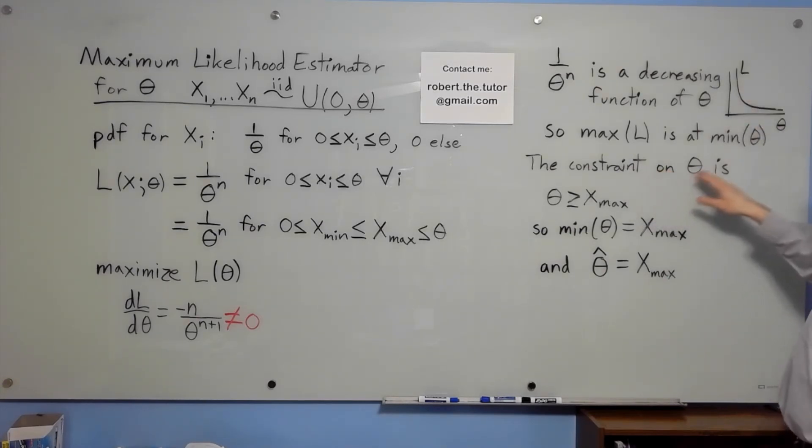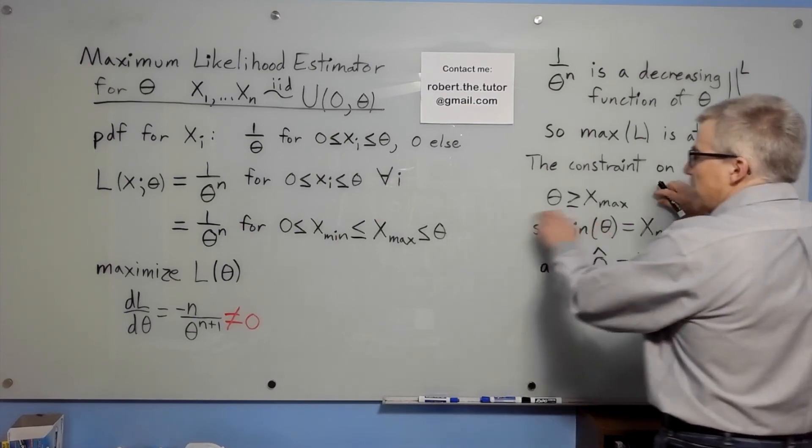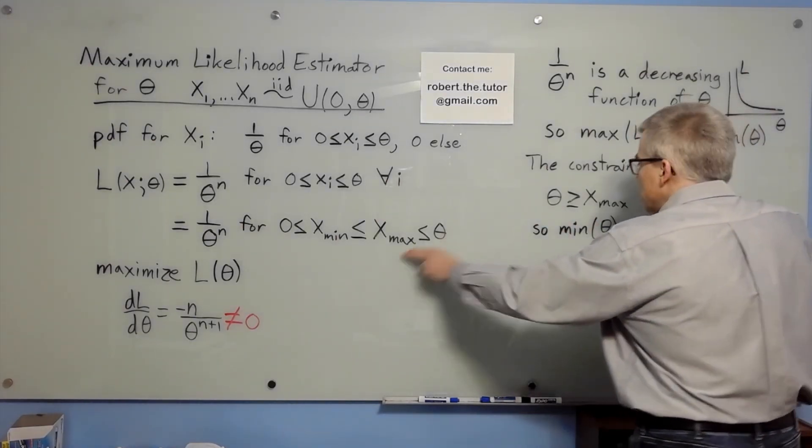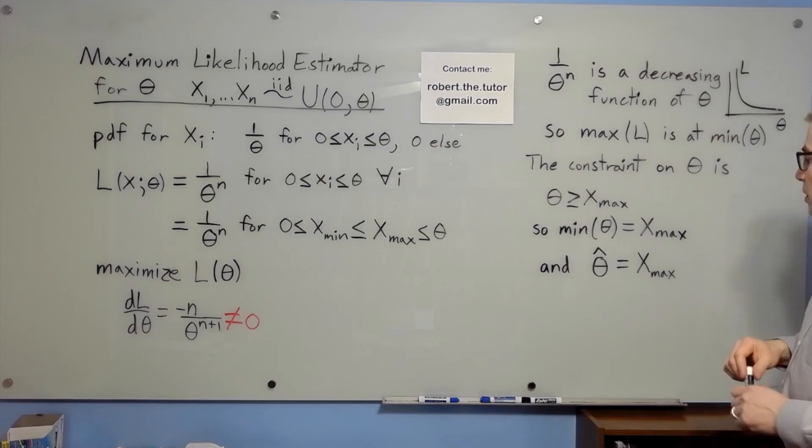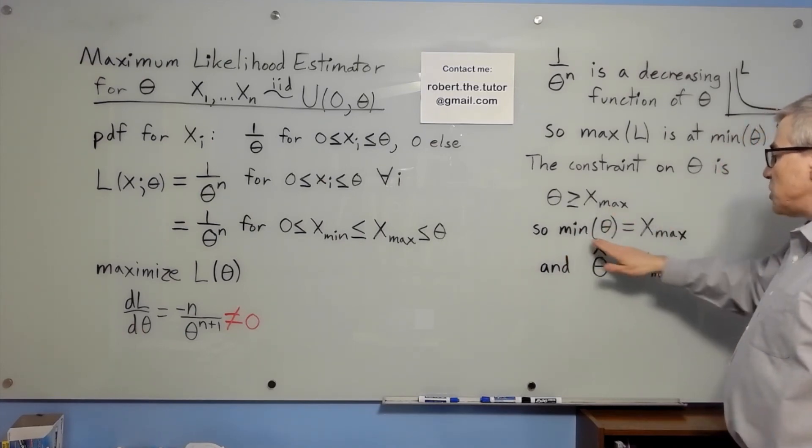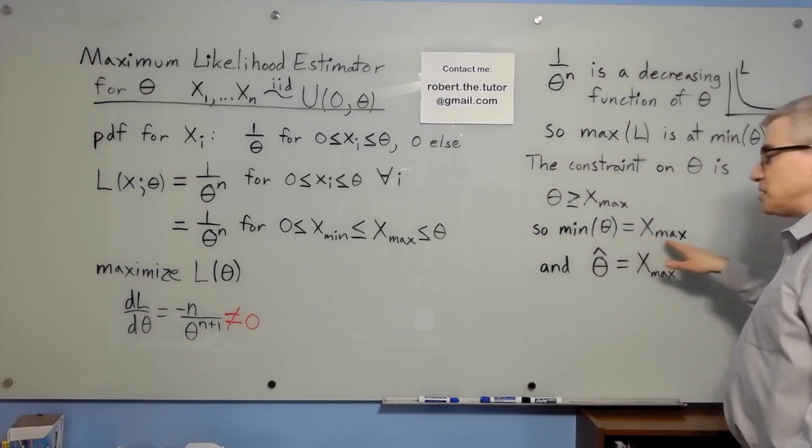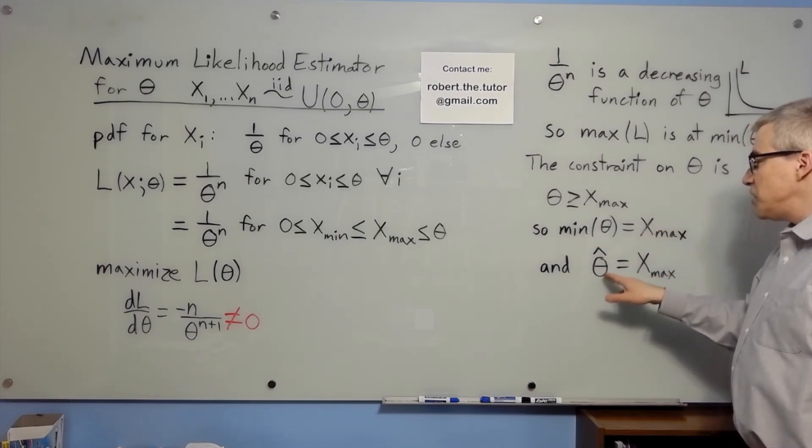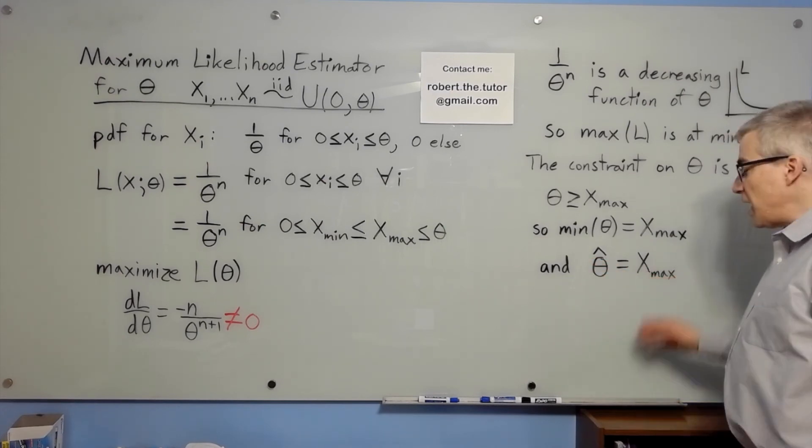The constraint on theta is that theta has to be greater than or equal to xmax. We want theta to be as small as possible, so the smallest theta could possibly be is xmax. Therefore, the maximum likelihood estimator for theta is xmax, or the nth order statistic.